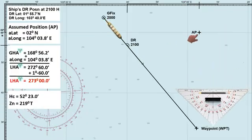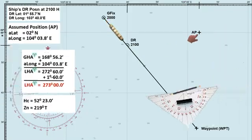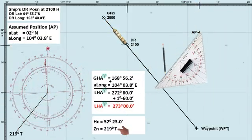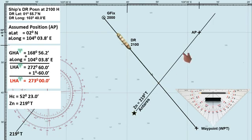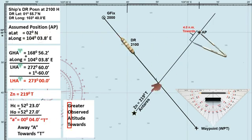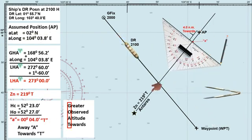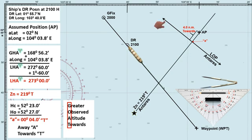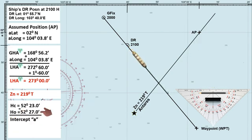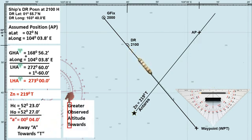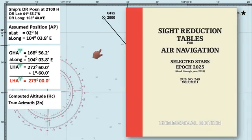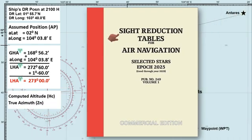Assumed position, AP, is a chosen or hypothetical position used primarily in celestial navigation when calculating a ship's position based on observations of celestial bodies. It is typically not an actual or fixed location but a theoretical one, chosen for ease of computation, often determined using the Marc Saint-Hilaire method with the help of sight reduction tables, commonly known as Table 249.